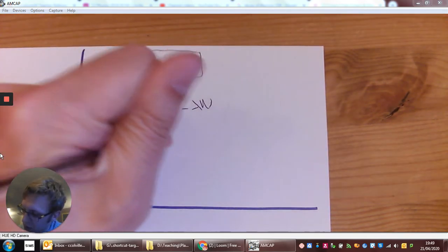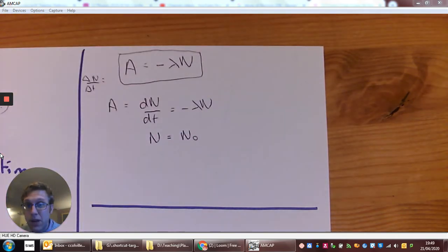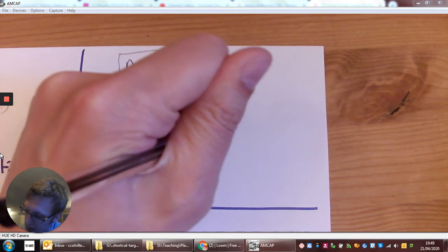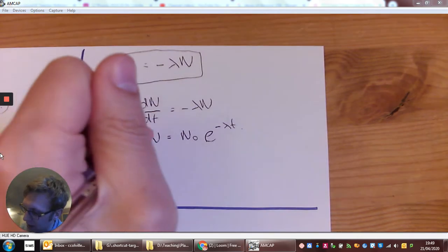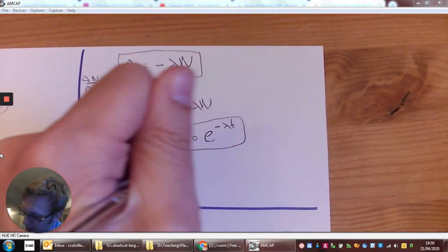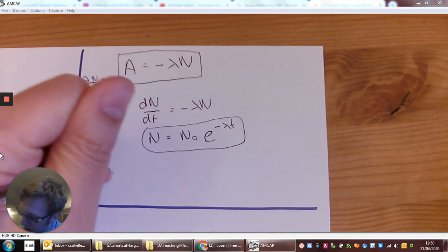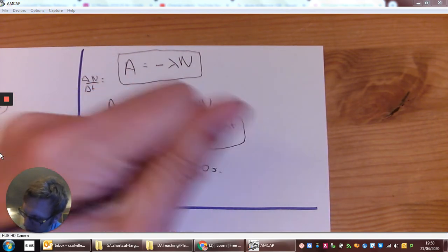We can say that the number of particles at a particular moment in time would be the number N naught there were at the start, e to the power of minus lambda t. That is the second equation we need to know. And the big thing is N equals N naught at t equals zero seconds.